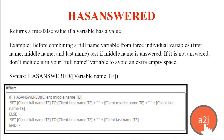Has answered returns a true/false value if a variable has a value — you're literally testing if the user has answered this variable. A common example is when you have the client's full name, and some people have a middle name and some don't. You can test if they've answered middle name. If they have, set full name to first space middle space last; otherwise, set full name to first space last. It avoids an extra empty space if they don't answer middle name. Syntax: has answered, parentheses, open bracket, variable name, close bracket, close parentheses.